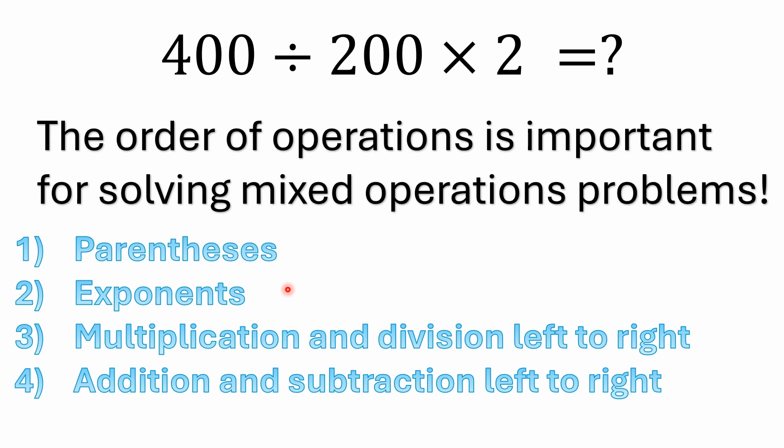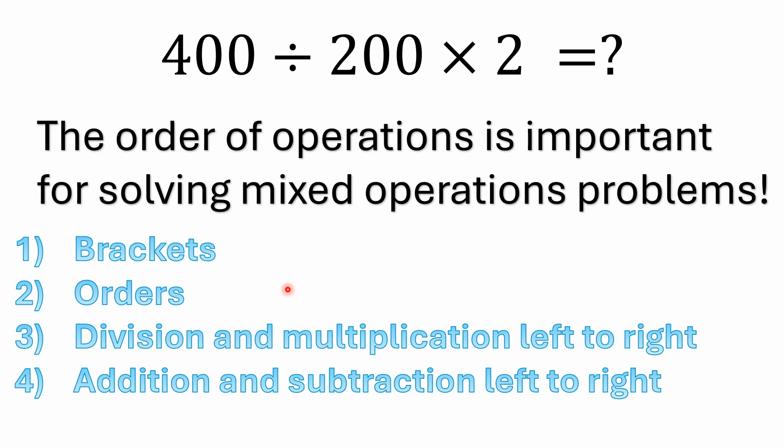Now a lot of people watching maybe from the UK or other parts of the world may be more familiar with a different acronym called BODMAS, B-O-D-M-A-S. It's really the same as PEMDAS. It's just using some different terminology, and actually I kind of like this one because it's brackets, orders, division and multiplication left to right once again. Division and multiplication have equal precedence, so just because BODMAS writes the D before the M, it doesn't mean that division has precedence over multiplication.